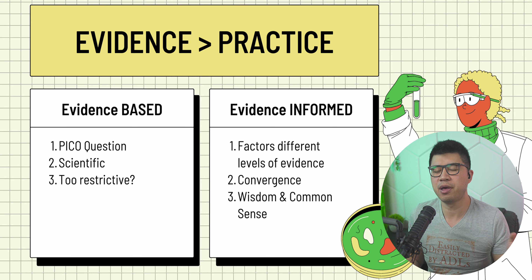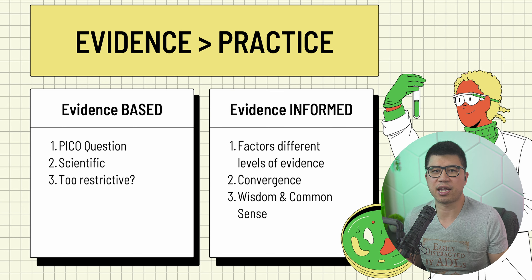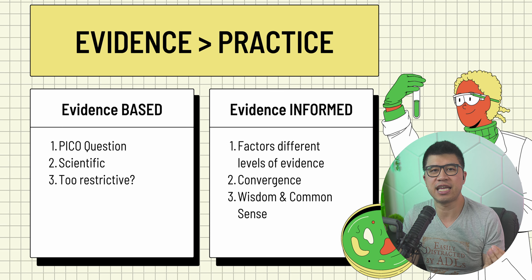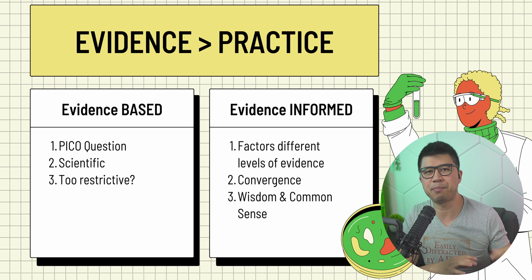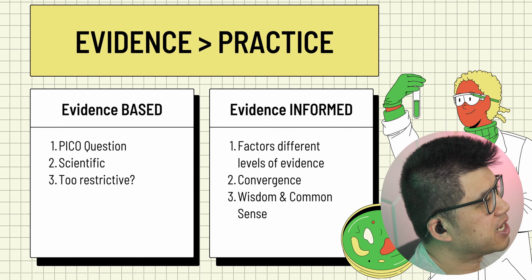Evidence-informed practice seeks to include more evidence from a variety of sources to inform our practice by adding our own wisdom and common sense. Other sources such as case reports and expert opinion are more weighed in evidence-informed practice. Compared to evidence-based practice, evidence-informed practice also factors in different levels of evidence, all the way down to expert opinion. A term that embodies evidence-informed practice is finding a convergence in our evidence sources. Evidence-informed practice can also be considered more client-centered, compared to evidence-based practice, which is more typically thought of as focused on the science of quantitative evidence.